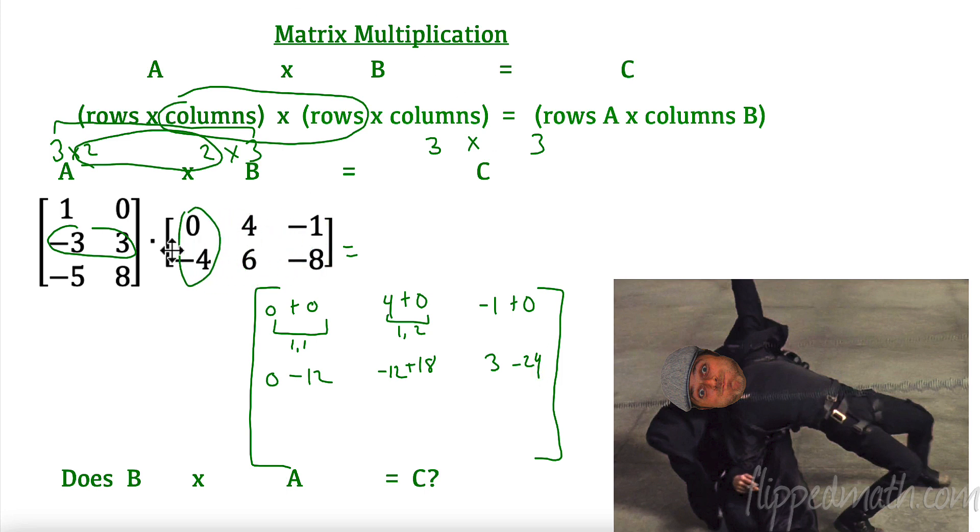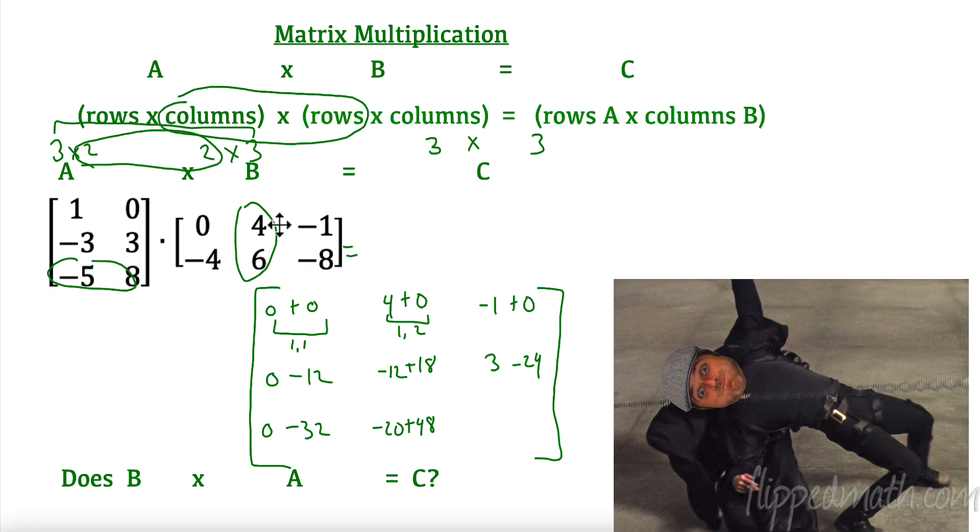Alright? Now we're moving on to the last row. So we have negative 5 times 0 is 0. 8 times negative 4 is negative 32. Move it to the next column. Third row, second column. Negative 5 times 4 is negative 20. 8 times 6 is 48. Alright? And last but not least, we're going to move it to the third column. Negative 5 times negative 1 is 5. 8 times negative 8 is negative 64.